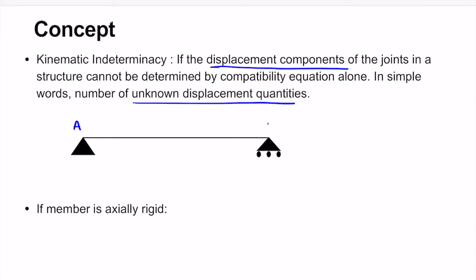Let us call the left support point A and the right support point B. Can point A move vertically upwards or downwards? No, so the vertical displacement is zero. Can it move horizontally? No, so horizontal displacement is also zero. However, point A can rotate because it is a hinge support, so there is an unknown rotation theta A.